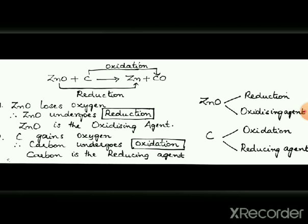Now take carbon changing to carbon monoxide. Here carbon gains oxygen, and gain of oxygen is oxidation. Therefore carbon undergoes oxidation. Since carbon undergoes oxidation, it will act as a reducing agent. So zinc oxide undergoes reduction and acts as the oxidizing agent, while carbon undergoes oxidation and acts as the reducing agent.